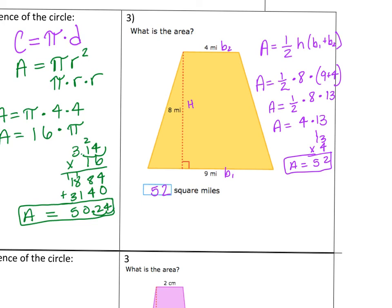So for the area of a trapezoid, you just add base 1 to base 2. You multiply it, and then you divide it by 2.